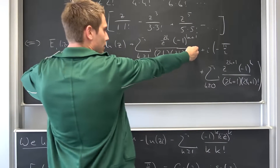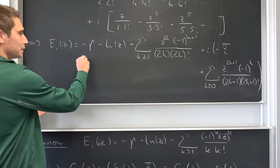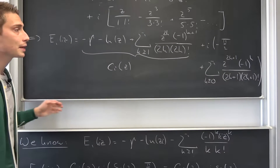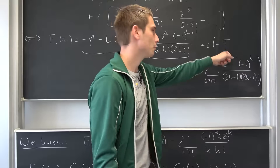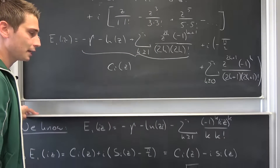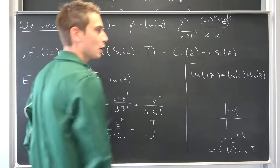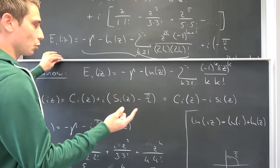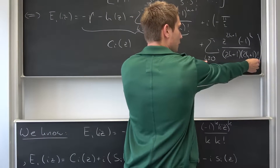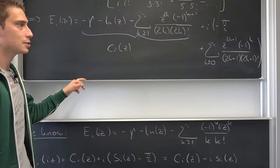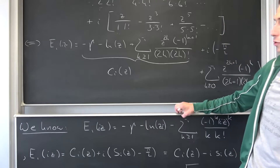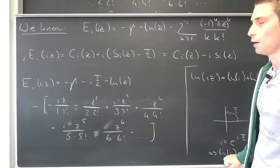The real part is our Ci(z) — that's our cosine integral. The imaginary part consists of negative pi over 2 plus the odd series, which is basically negative our sine integral, or equivalently Si(z) minus pi over 2 — meaning negative pi over 2 is what we have, and our sine integral has this series representation. I hope this makes sense. That concludes our discussion of the series expansions for the sine and cosine integral. Now you can go ahead and do some numerical analysis and actually calculate values of your favorite integrals.